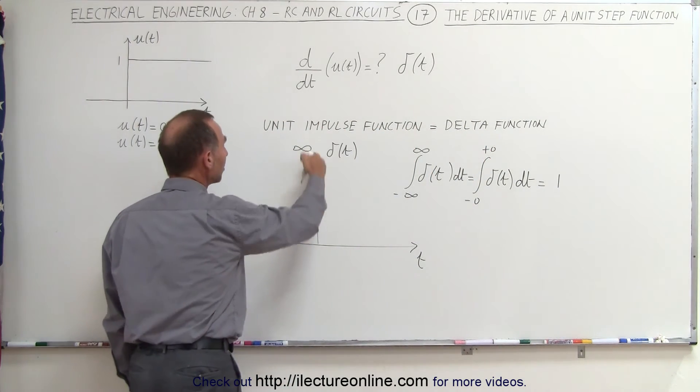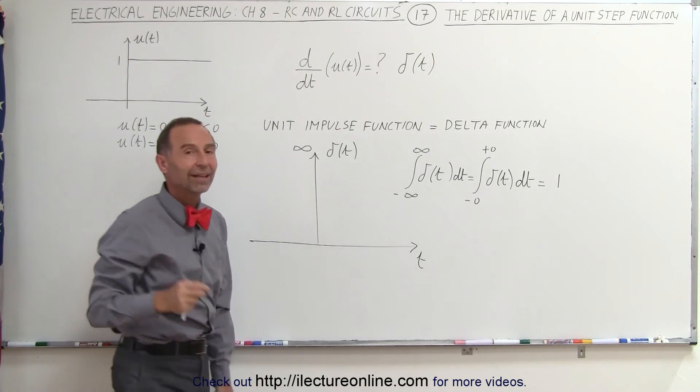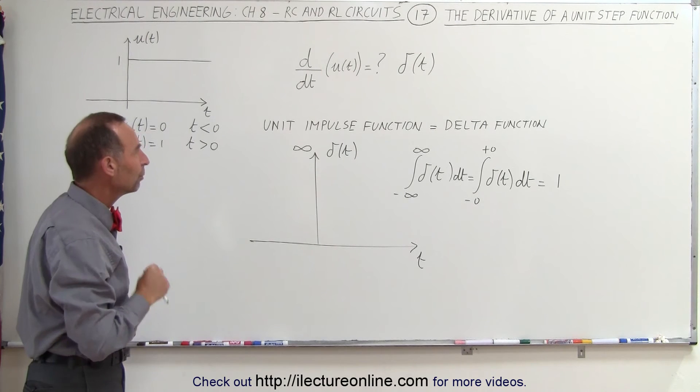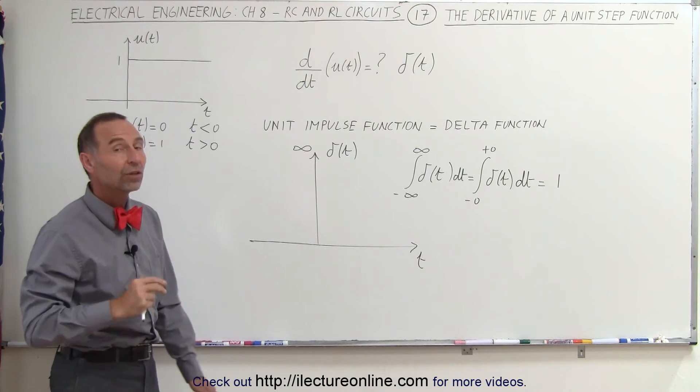In other words, the area underneath this function, since it's infinitely narrow and infinitely tall, by definition the area underneath that curve will be equal to 1. And that's called the unit impulse function or the delta function,